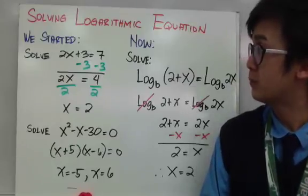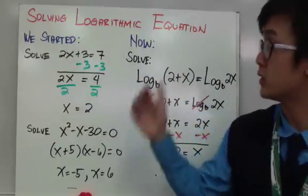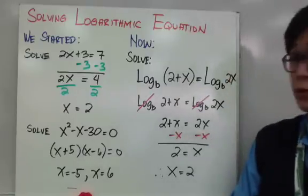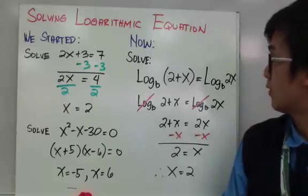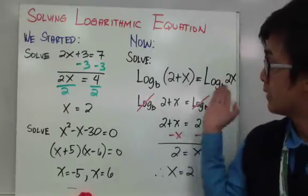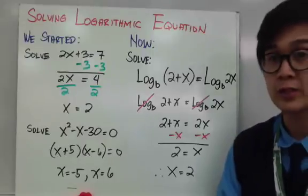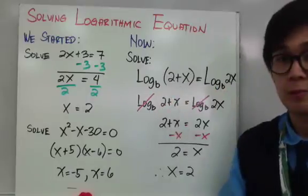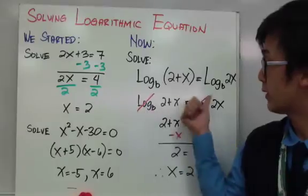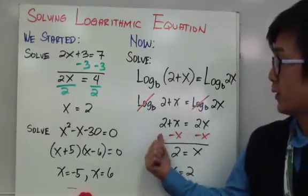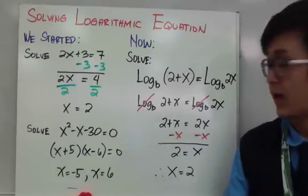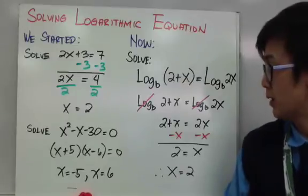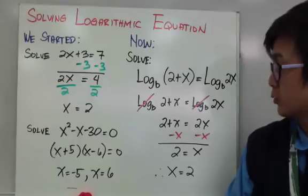Now we're going to work on logarithmic equations. In our first example, we have logarithm of 2 plus x base b equal to logarithm of 2x base b. The rule is simple: if you have the same logarithm on both sides of the equation with the same base, you can cancel the logarithms. You'll end up with 2 plus x equal to 2x, a linear equation. Subtracting x on both sides gives 2 equals x.